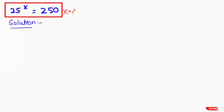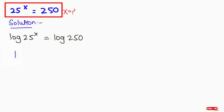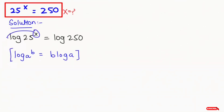In the first step I'm going to take log of both sides. Log of 25 to the power of x equals log of 250. In the next step I'm going to apply the logarithm rule that is log of a to the power of b equals b times log of a. So here I'm going to take this power in front, and this equation turns to x times log of 25 equals log of 250.